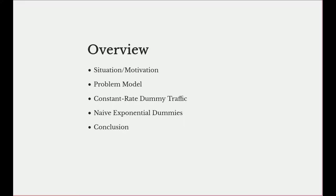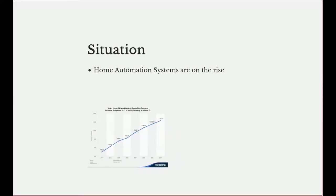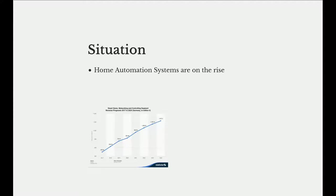To start with the current situation, we can see a steep increase in the presence of home automation systems in houses and apartments. Those systems are getting more and more common, they are getting cheaper, the hardware is getting cheaper, and more and more people start to install such systems to increase the comfort of living, to save energy, or even to increase the security.